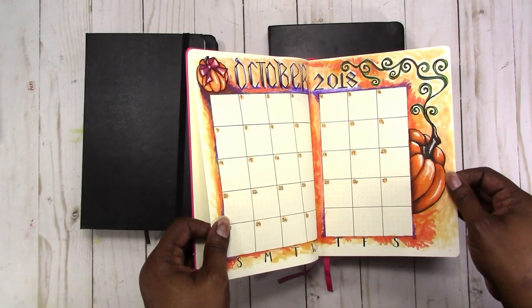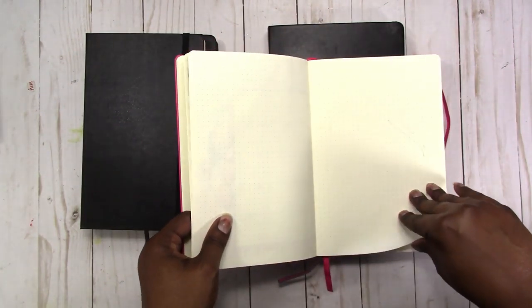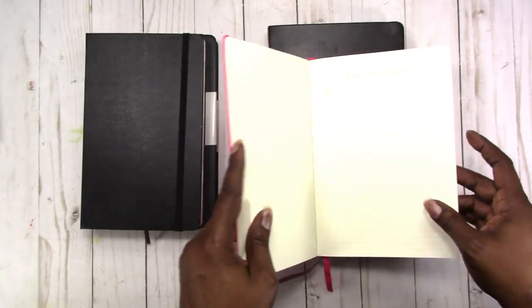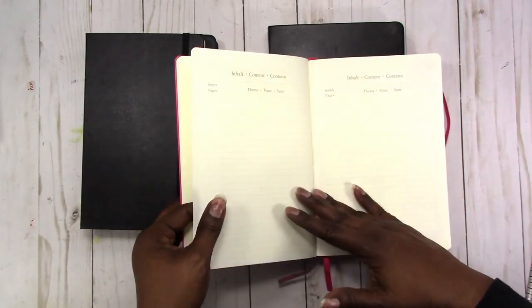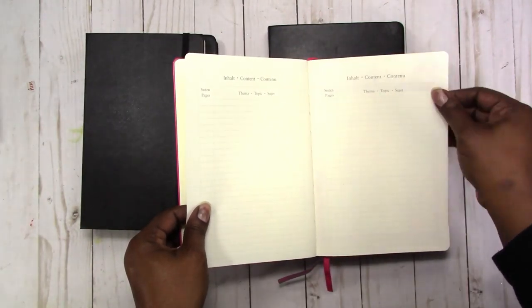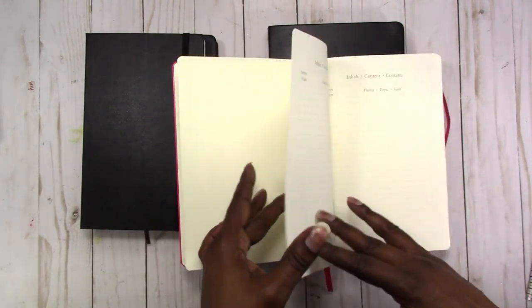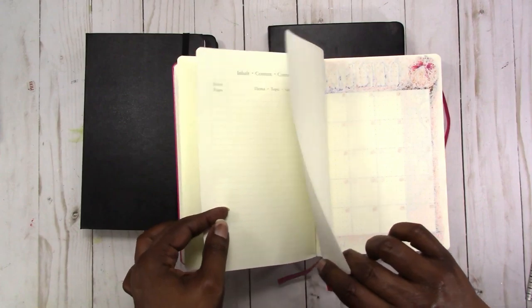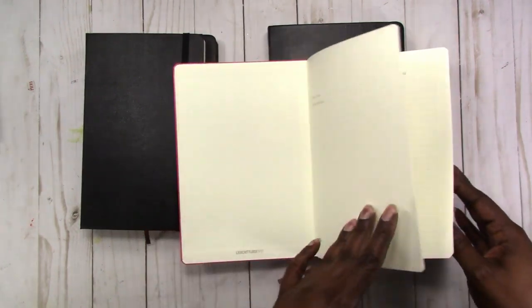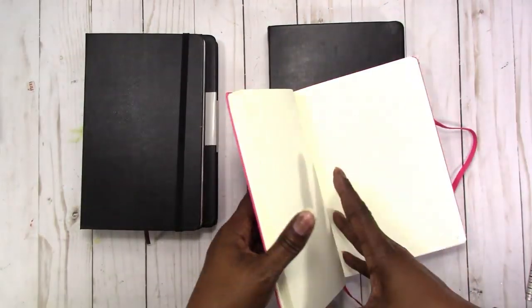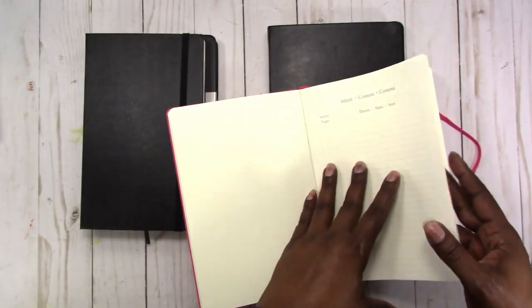This one does come with an index as well and it's actually more labeled than the Michaels index. This one is a three page index. It does give you a place for your name and address.